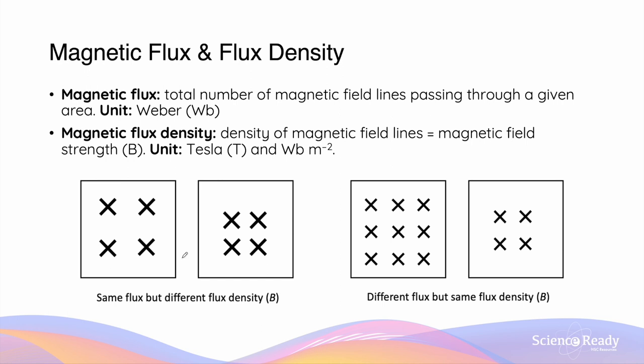Magnetic flux is defined as the total amount of magnetic field going through a certain area of a conductor. It can also be defined as the total number of magnetic field lines passing through the given area. Magnetic flux is measured in the SI unit of Weber, or Wb for short.